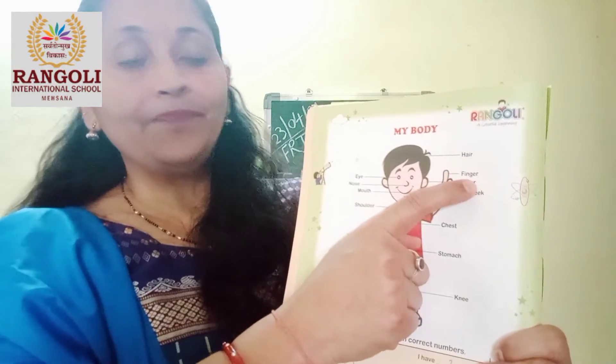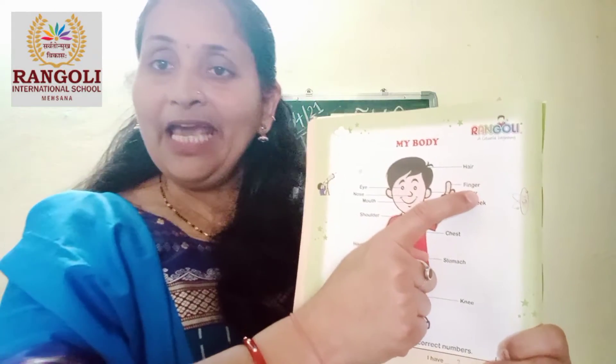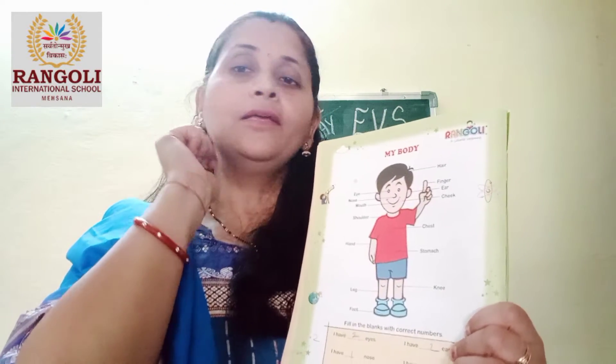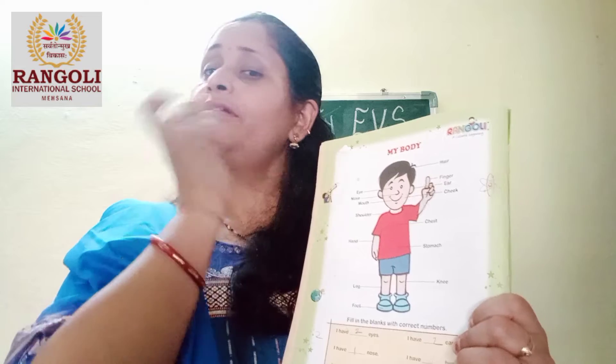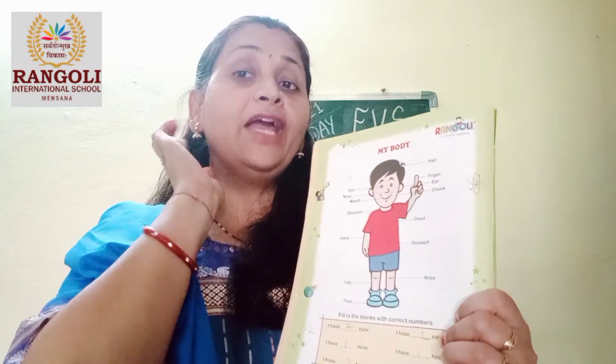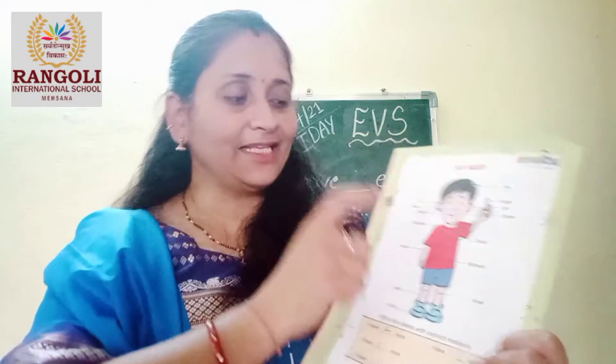Then what is this? Ear. What is this? Ear. How many ears? Count it — one and two. We hear with our ears.